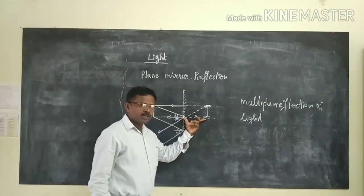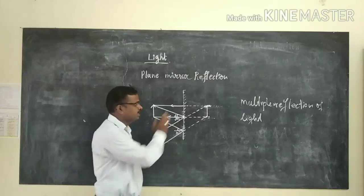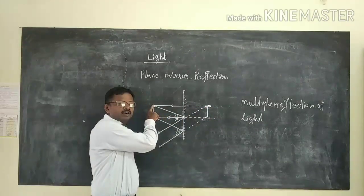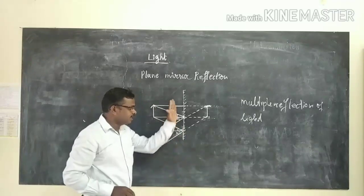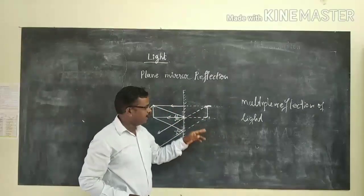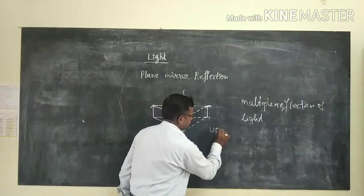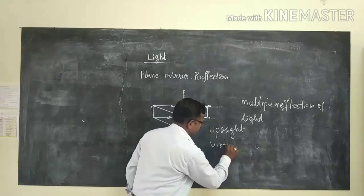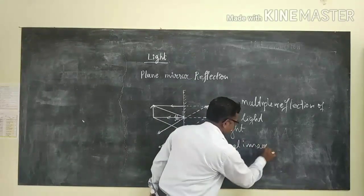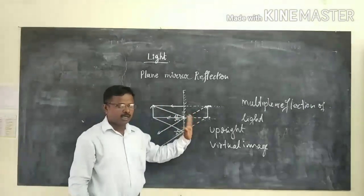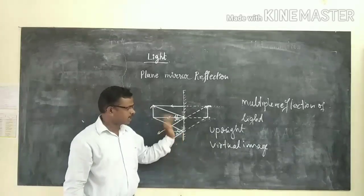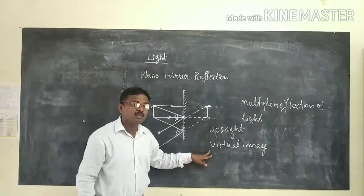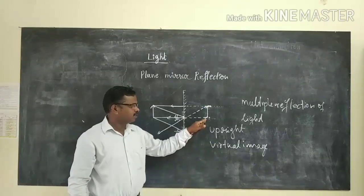The distance between the image and the mirror is always equal to the distance of the object from the mirror in the case of a plane mirror. Moreover, the height of the image is always equal to the height of the object. In the case of a mirror, we can see the image on the other side, and the image is always upright. This type of image is called a virtual image — it can only be seen in the mirror and cannot be caught by a screen.